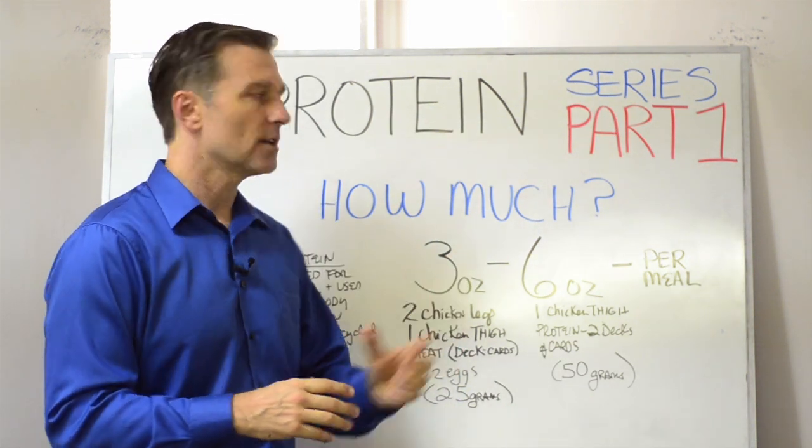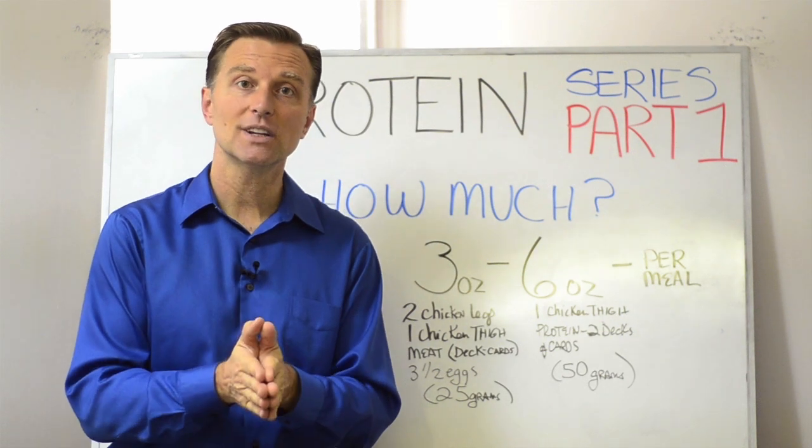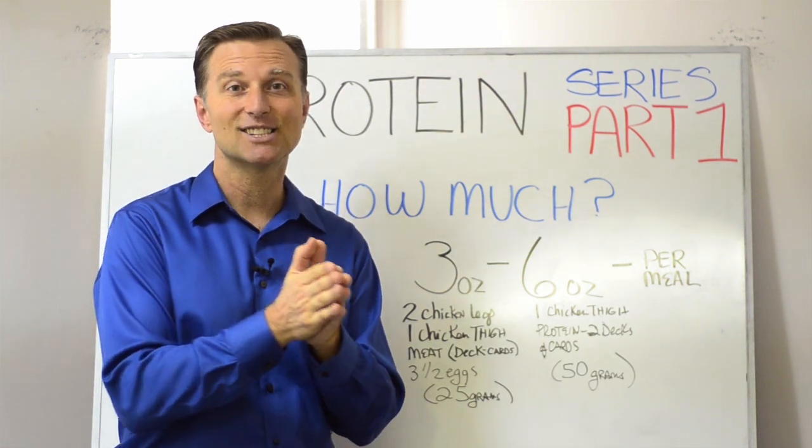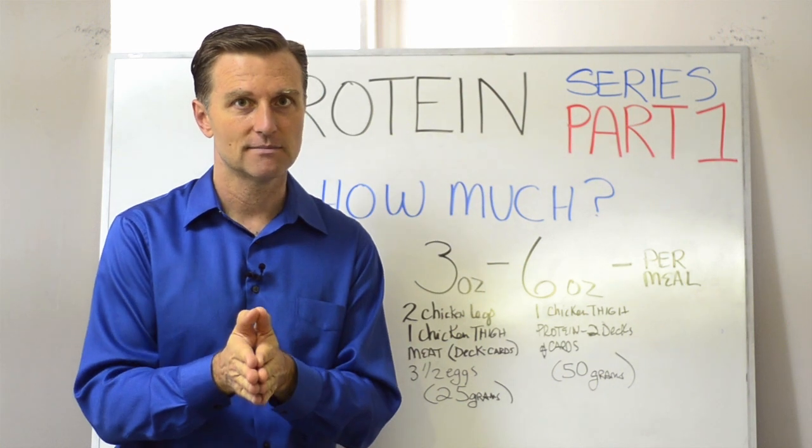So three to six ounces of protein. In the next video, we're going to talk about the relationship between protein and starch, like meat and potatoes. I'll see you then.